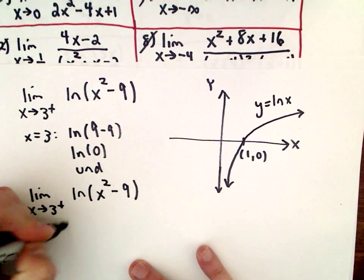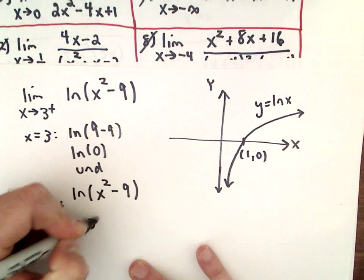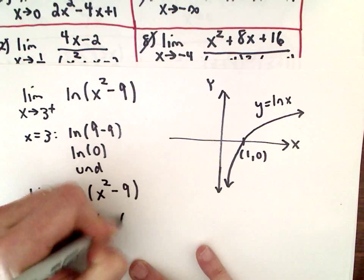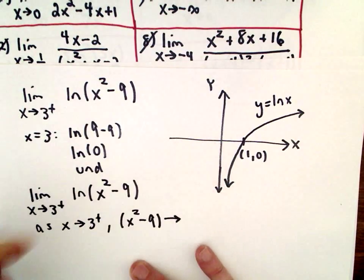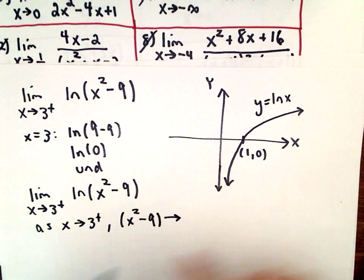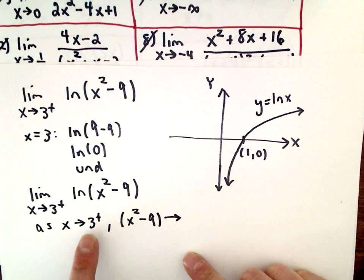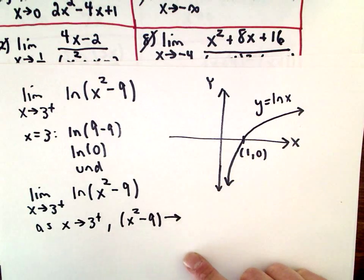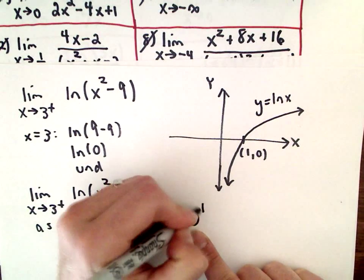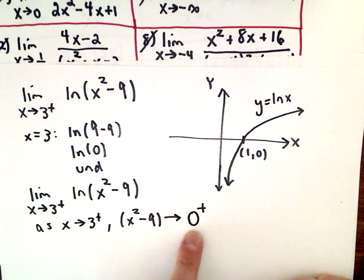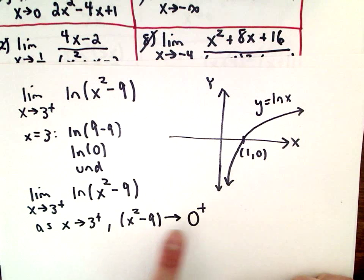As x approaches 3 from the right, x squared minus 9 is going to get closer and closer to 0. I'm using 3.1, 3.01, 3.001 — the numbers I get out are going to approach 0 from the right, so I'm going to get positive numbers. If I take something a little bigger than 3, square it, subtract 9, I get a number close to 0 but positive.